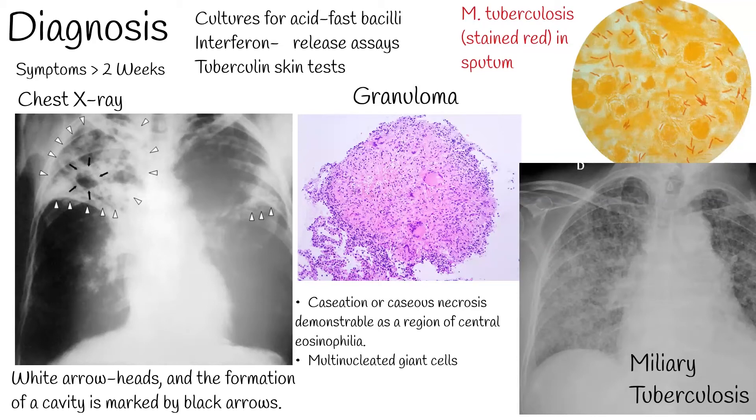Disseminated tuberculosis may also be seen in the spine, the central nervous system, or the bowel.